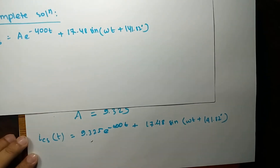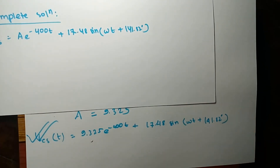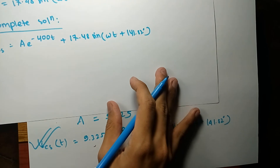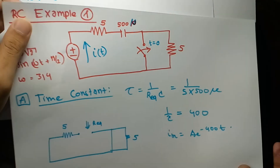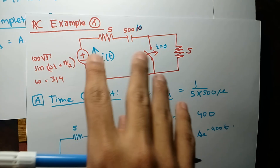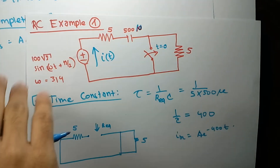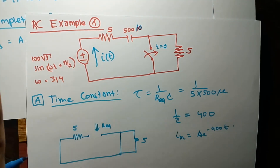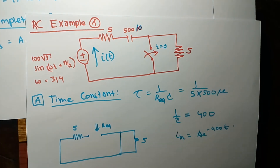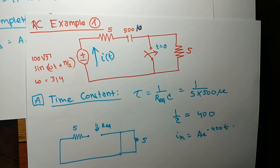This is the complete solution for the current through the voltage source. This concludes our first RC transients problem. If you take this problem along with the five other circuit problems, you should have sufficient practice. If you have any questions, please leave them in the comments, and don't forget to subscribe on YouTube and Facebook.